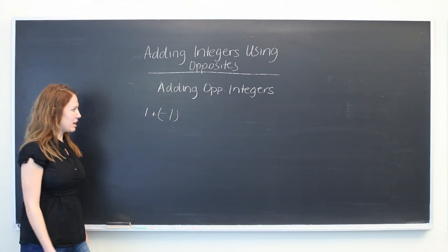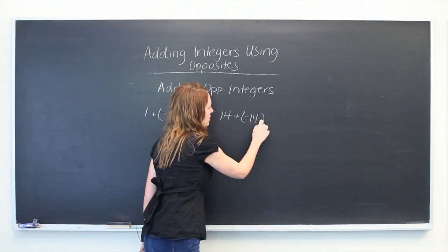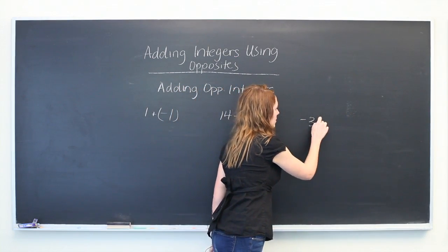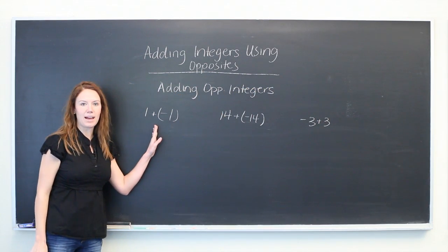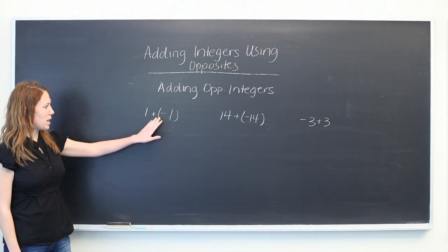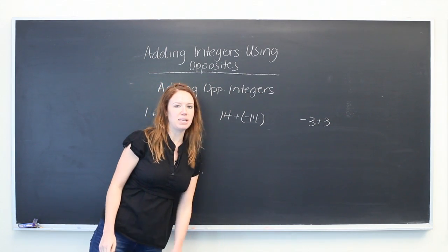So let's look at a couple of cases. Here we have three cases where we are adding opposite integers: one and minus one, fourteen and minus fourteen, and minus three and three.